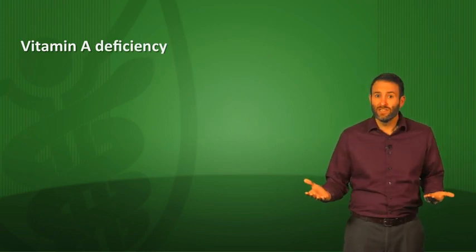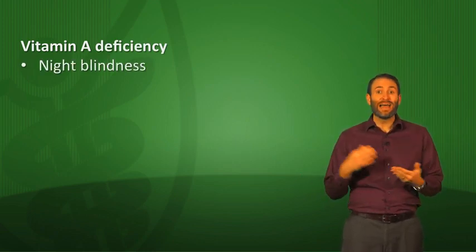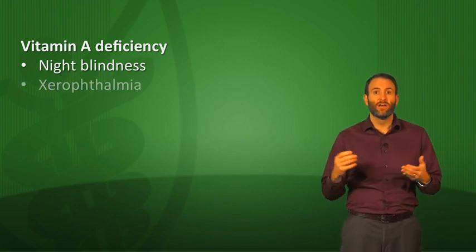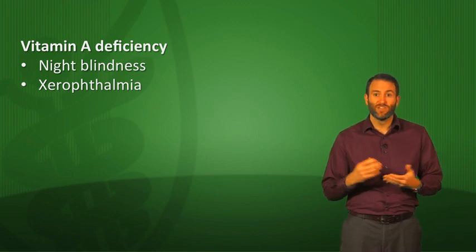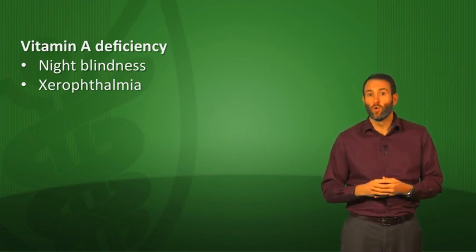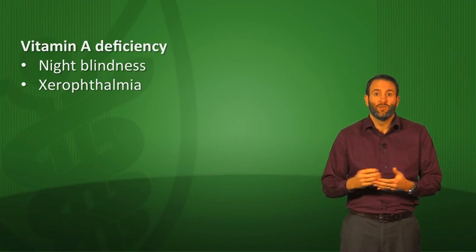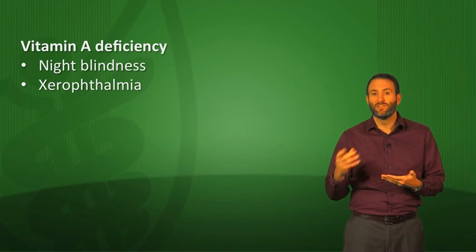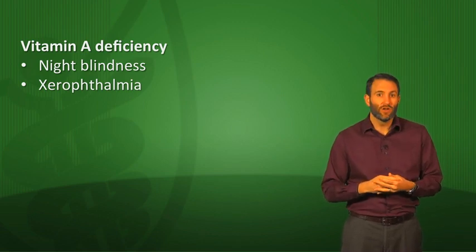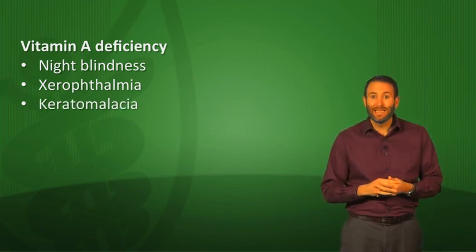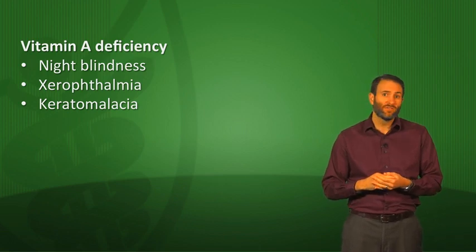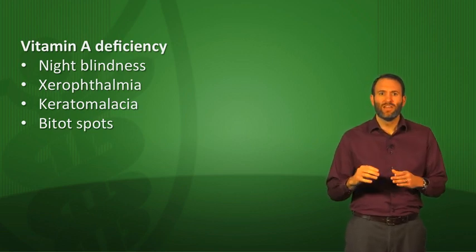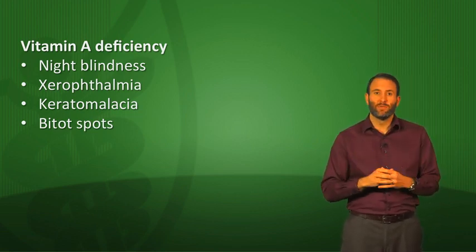Signs of vitamin A deficiency include night blindness, since vitamin A is very important in vision. You can have xerophthalmia, which is pathologic dryness of the conjunctiva and cornea resulting in corneal ulceration and even blindness — if you see corneal ulcerations on a test question, put vitamin A deficiency on your list. You can also have keratomalacia, which is wrinkling and clouding of the cornea. And Bitot spots — dry, silvery-gray plaques on the bulbar conjunctiva. So there are a lot of eye findings with vitamin A deficiency.